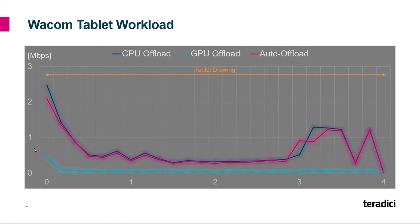The graph shows a maximum of 3 megabits per second on the vertical axis. The pink line, which is the PCoIP auto-offload mode, and the blue line, which is the PCoIP CPU offload, are almost coincidental. That's because due to the very low pixel rate during a typical drawing activity, there's no need to compromise color accuracy. So for a small bit of additional bandwidth — still well under 1 megabit per second — we're able to deliver highly color-accurate drawing operations using a Wacom tablet.